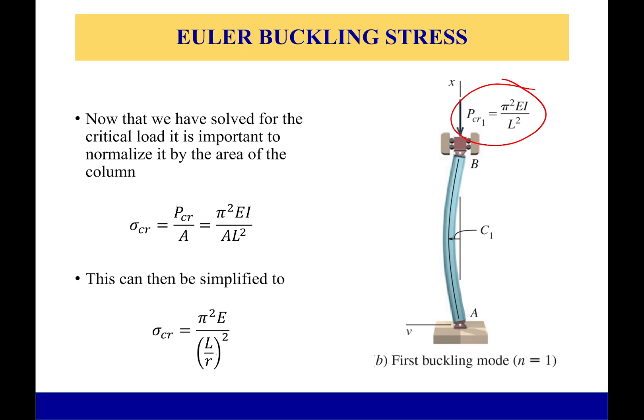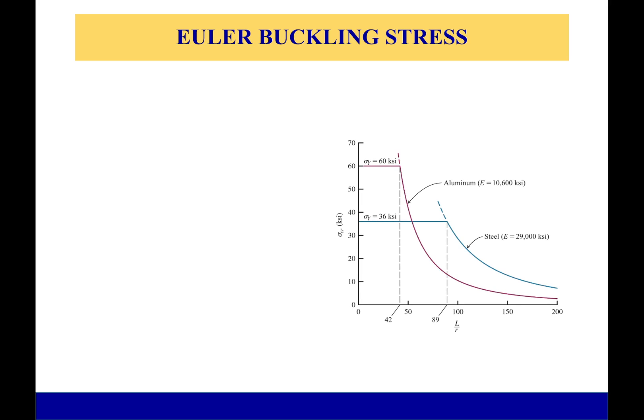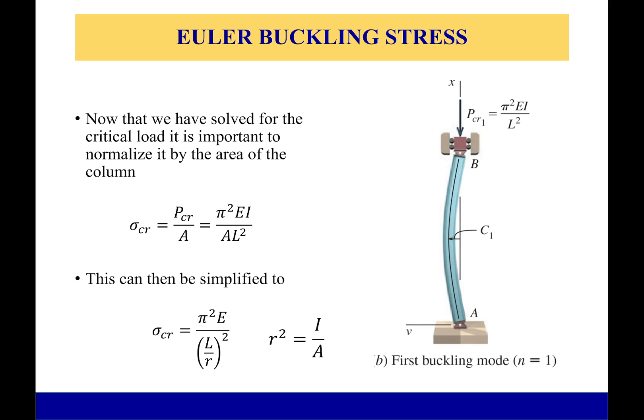This is what's called the slenderness ratio. My slenderness ratio is simply equal to L over r, and that r is coming from the moment of inertia over the area times the square root. So the more slender my column is—as in its length versus its area—the smaller my critical stress will be.